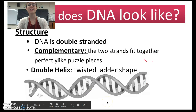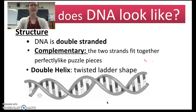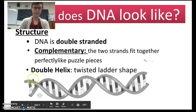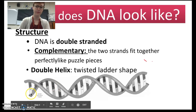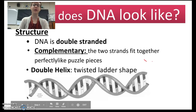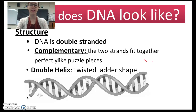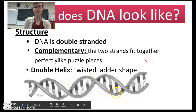So what does the structure of DNA look like? DNA is double-stranded. Follow along with my pointer — I've got one strand of DNA here connected with a second strand of DNA here. These strands are complementary, which means they fit together perfectly, just like two puzzle pieces would, and we'll talk about how that works later on. DNA forms this shape called a double helix, which you can see here — it just looks like a twisted ladder shape.